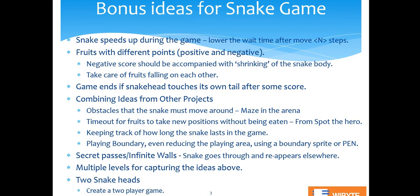Similarly, you can have fruits which are more like some kind of poison — if the snake eats them the player gets a negative point. Negative points are very interesting because they involve shrinking the snake body. Unlike positive points which make a new clone and attach it, a negative point causes you to remove a certain number of clones. You have to be careful: if a fruit gives negative five but only three clones exist, you can only remove three — you cannot remove five. So handle it carefully.